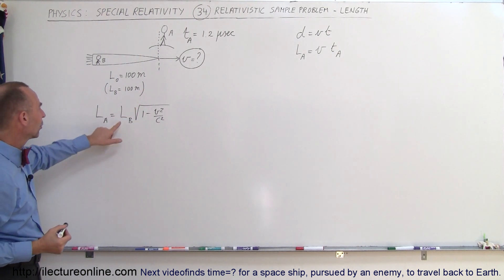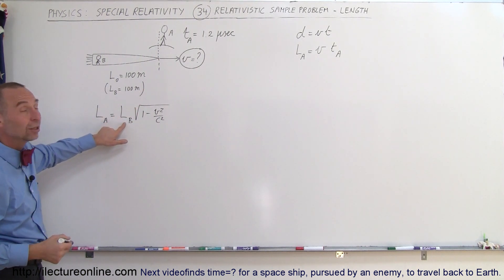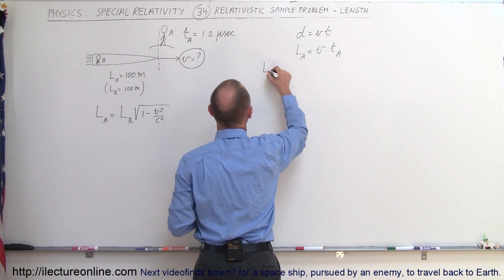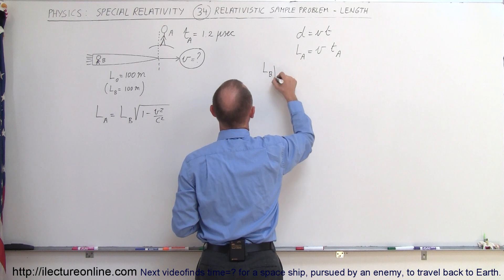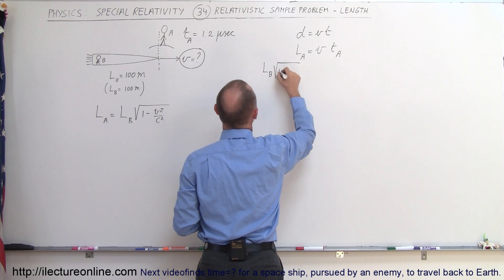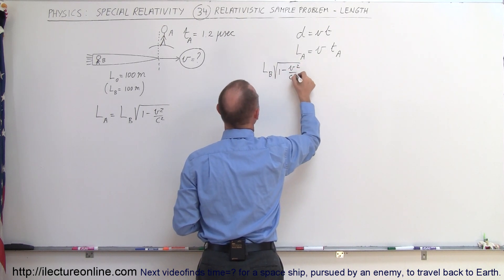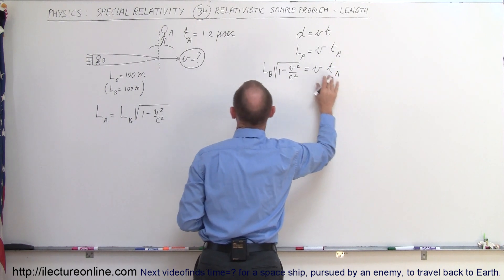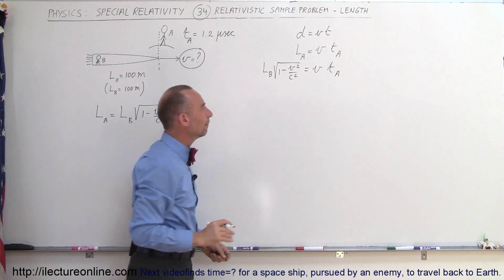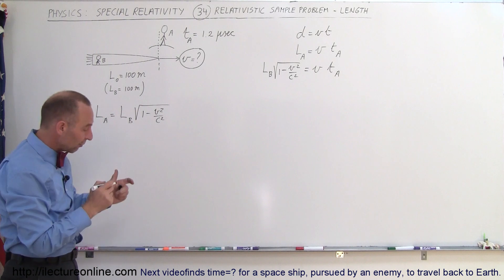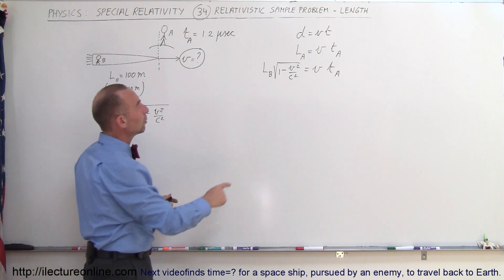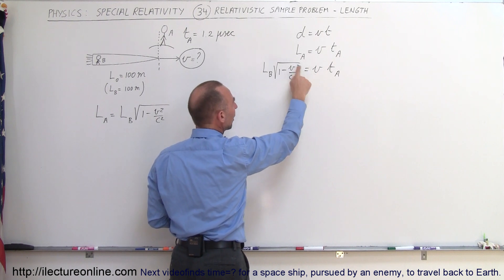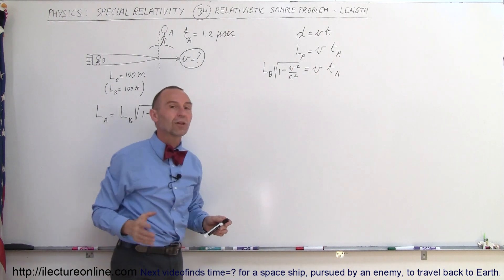We're going to replace L sub A and instead plug in the equivalent in terms of the length as measured by B. So the length as measured by B times the square root of 1 minus V squared over C squared equals the velocity times the time as measured by A — which is a known quantity. Now we have an equation where the length as measured by B and the time as measured by A are both known, and all we need to do is solve for velocity.